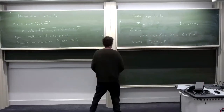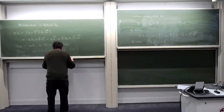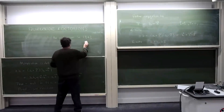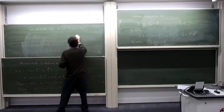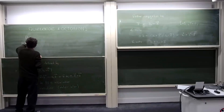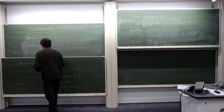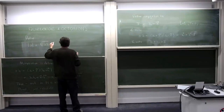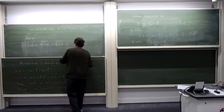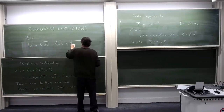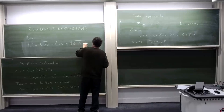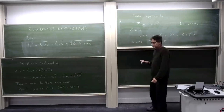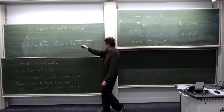We define the norm or absolute value of a quaternion to be the square root of A times its conjugate. Explicitly, that works out to be the square root of A₀² + A₁² + A₂² + A₃². So it's just the usual Euclidean norm in four-dimensional Euclidean space.